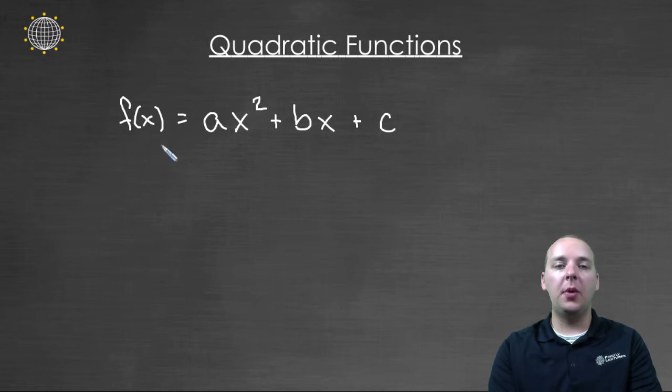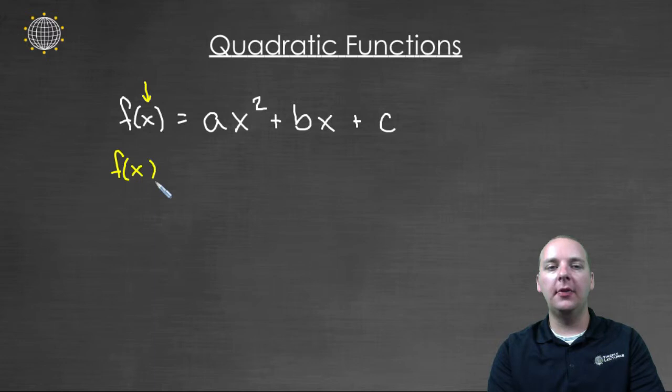And so now every time I want to evaluate the quadratic at a certain place, I'll plug that number in for x and for all the x's, and then that output value will be f of x. Let's look at an example. Let's say we had a quadratic function, f of x equals x squared plus three x minus one.